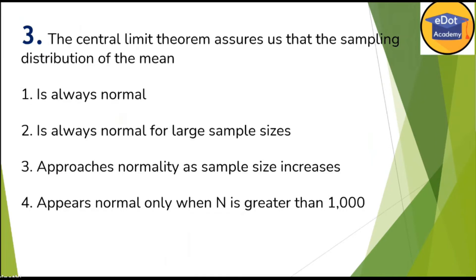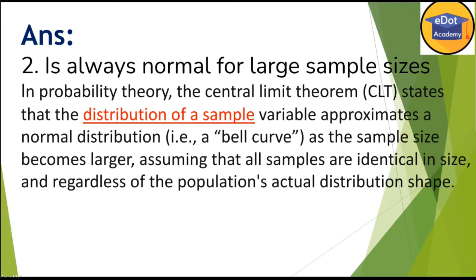The Central Limit Theorem states that the sampling distribution of the mean is always normal for large sample sizes, and it approaches normality as sample size increases. Option three says it appears normal only when n is greater than 1000 — that is incorrect. The key concept: as per the Central Limit Theorem, the sampling distribution of the mean is always normal for a large sample size. Keep this in mind.